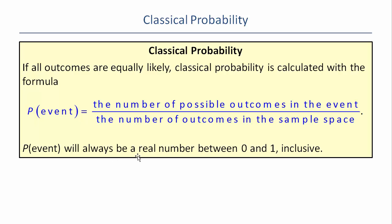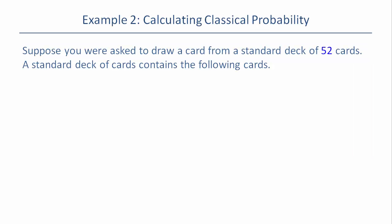Remember that probabilities are always a real number between 0 and 1. They can be 0 if something can never happen, and 1 if it's guaranteed to happen. For example, 0 would be something like the probability of dating a supermodel, and 1 would be death and taxes or the sun coming up tomorrow.